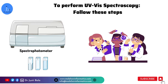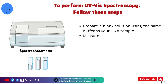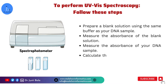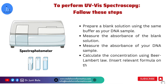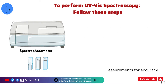Let's see how you can do UV spectroscopy. These are the general steps: prepare a blank solution using the same buffer as your DNA sample, then measure the absorption of the blank solution, then measure the absorption of your DNA sample. Once you have the reading, calculate the concentration using Beer-Lambert law. For accuracy, you can repeat this experiment three times with different dilutions.